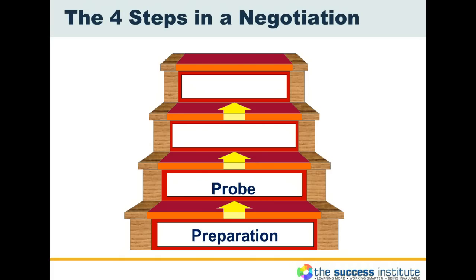The second step is to probe, at which point we are interested in finding out more about what the other person wants, what they're thinking, perhaps why they want it. We're not telling them too much about what we want, but rather we're interested in learning more about them. The third step is the propose phase — having received their information, we propose what we're thinking: are we close, or are we some way apart? In this propose phase we go backwards and forwards and we bargain.